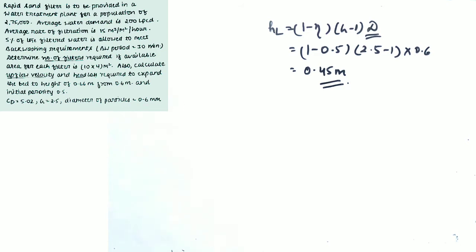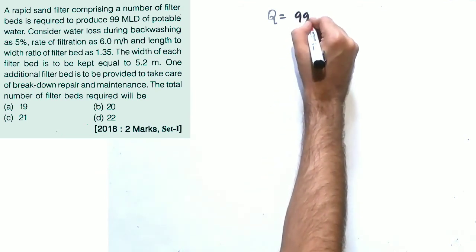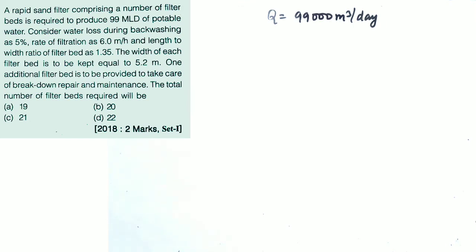I hope you are clear with this portion. Now there is one more question related to rapid sand filter — the GATE 2018 question — which will sound easy after solving the extensive one. A rapid sand filter is required to produce 99 MLD of potable water. Backwashing loss is 5%, rate of filtration is 6 m/hr, length-to-width ratio is 1.35, and width is given as 5.2 m. You are asked to calculate the total number of filters, including one standby filter. The discharge here is already the design discharge: 99,000 m³/day.